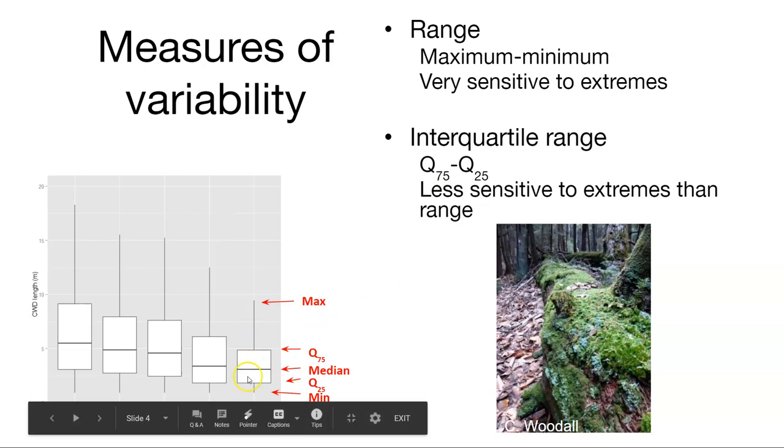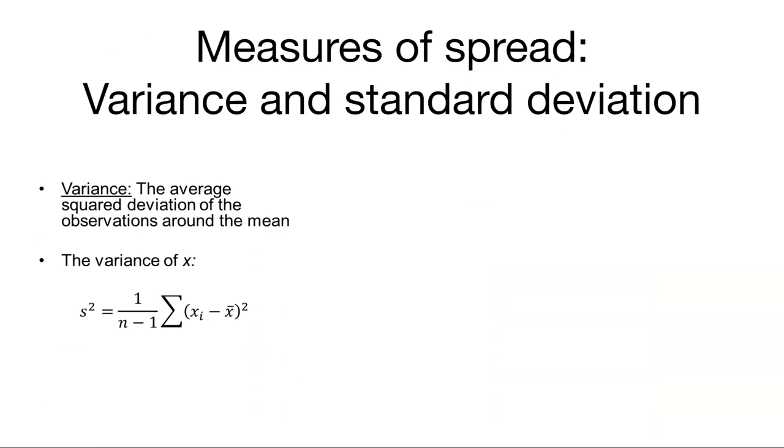You could also take what we call the interquartile range, or what you're seeing here, where are the boxes in the box plot? That is the 75th quartile minus the 25th quartile. And that will be less sensitive to some of those extremes. And so it's a useful measure of variability.